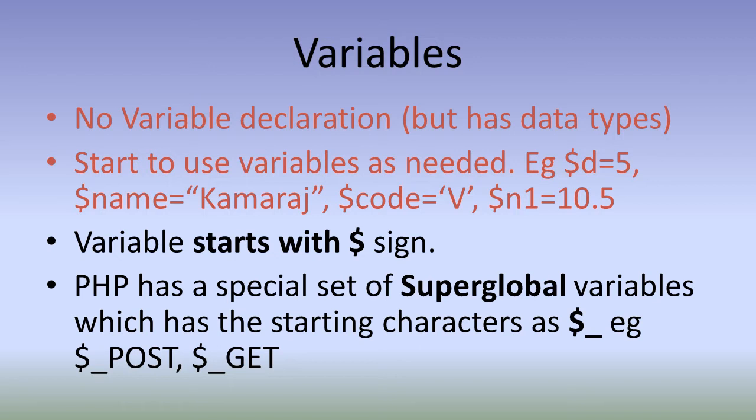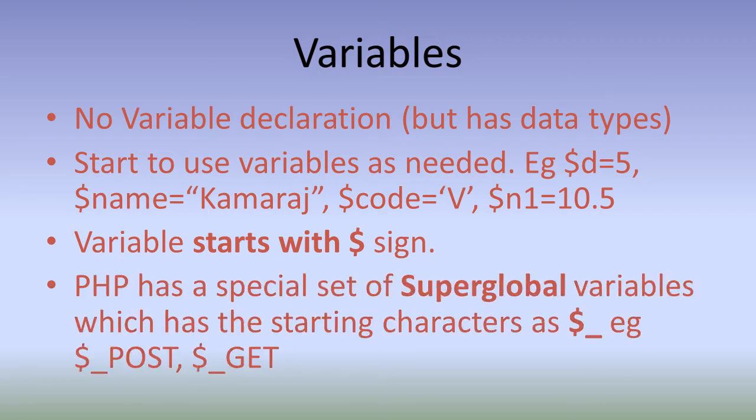$n1 equal to 10.5. How does PHP identify that it is a variable? When we start the variables with $ sign, PHP identifies that it is a variable. PHP has a special set of superglobal variables which has the starting characters as $_. Superglobal variables means it will be available across all the files that we create using PHP. $_POST and $_GET are common superglobal variables we will be using.